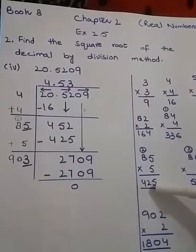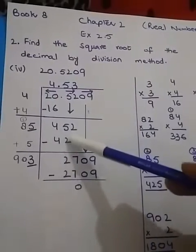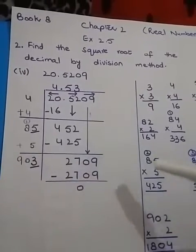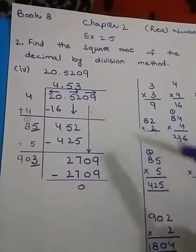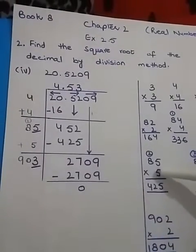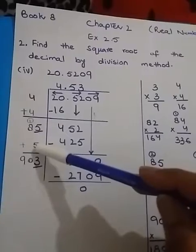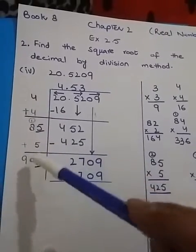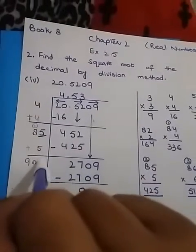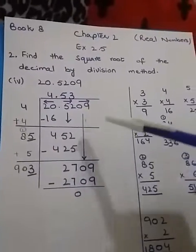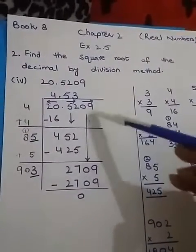86×6 is 516, which is bigger than 452, so I'm going to take 425. After subtraction I get 27. Don't forget to write this 5 here in the answer, and don't forget to add this 5 here. 85 plus 5 gives us 90. Now we have to find this digit on the unit place.